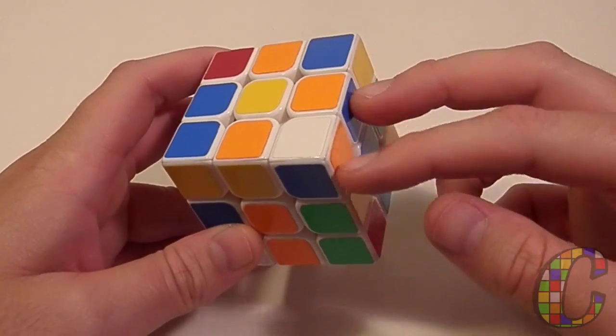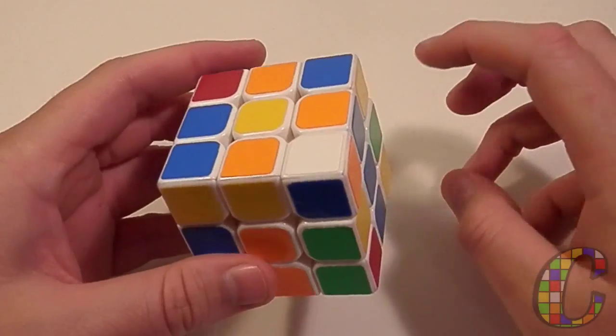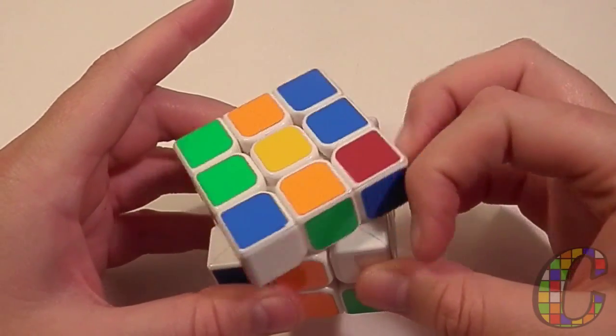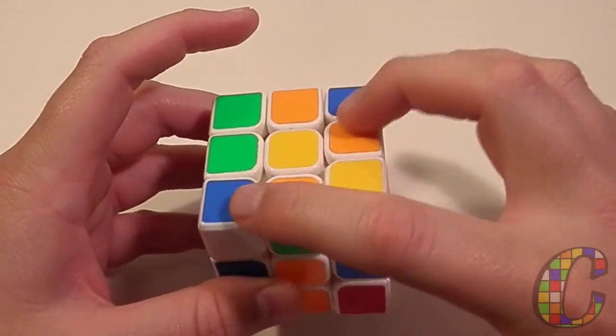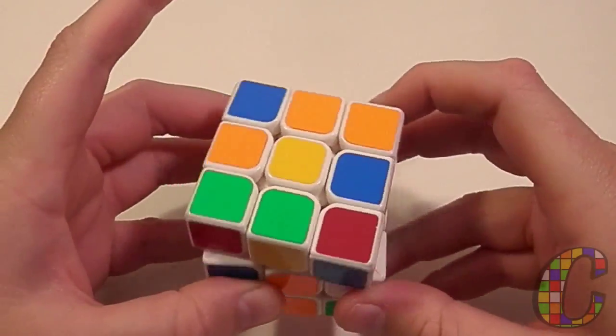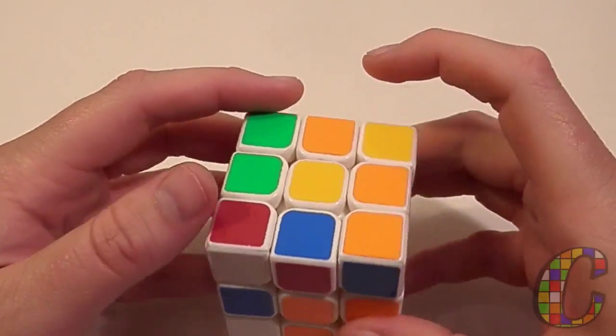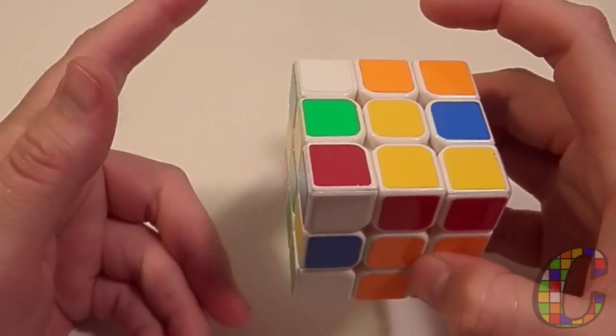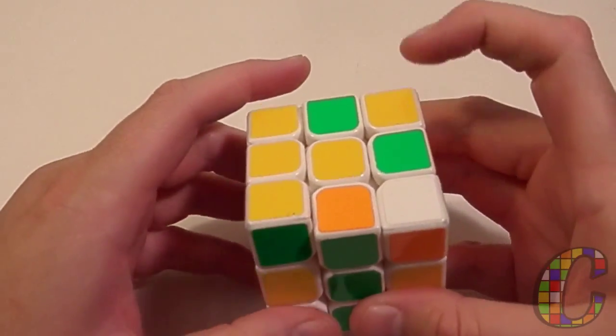See this blue and orange pair right here? So what you can do is do R, U2, R prime to set those up. Put them in place. You've got the red and the blue here. Just separate like that. Put them in.